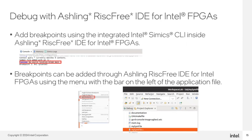Adding breakpoints for debugging can be done through the Intel Simix CLI or through the options when right-clicking inside the file and selecting the option to add a breakpoint. A couple of command examples for debugging are: step line, bp list, and bp delete. These can be used in the CLI.